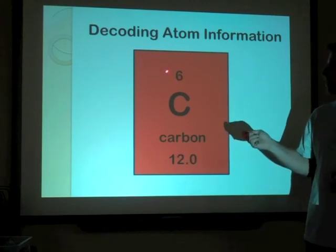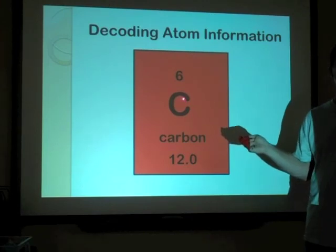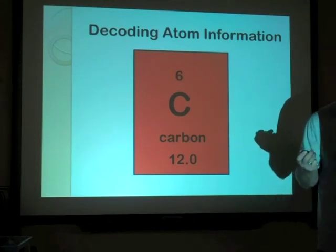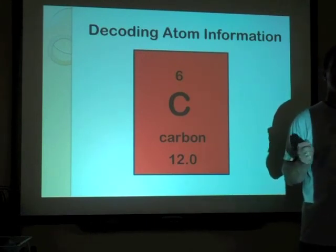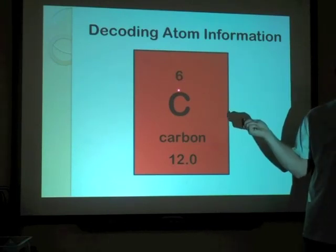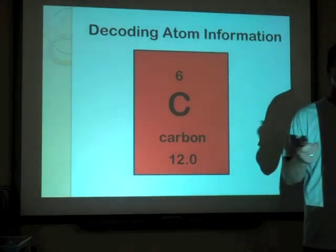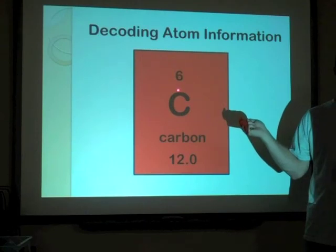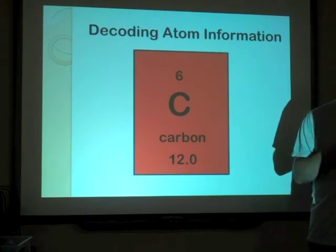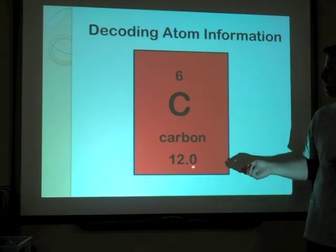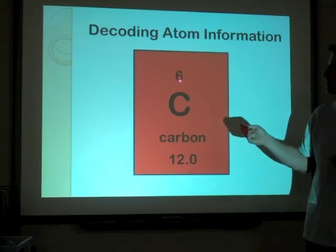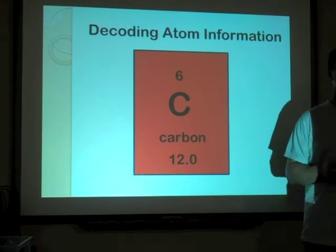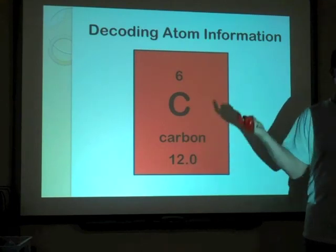Carbon has six protons — this top number will always tell you the number of protons. It will not tell you the neutrons, because neutrons sometimes differ. But this number always tells you protons. And since every atom is neutral, if it has six protons, it also has six electrons. This atomic number always represents protons. The atomic mass of 12 is a combination of protons and neutrons — if it has six protons, take 12 minus 6, and that gives you six neutrons. To find the neutrons, we always subtract the atomic number from the atomic mass.